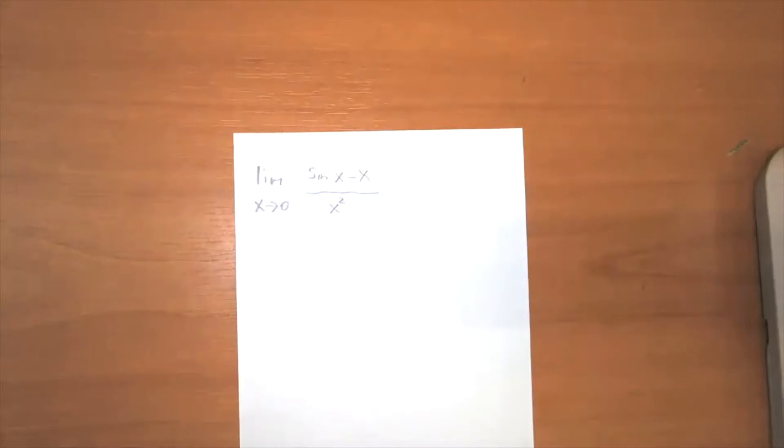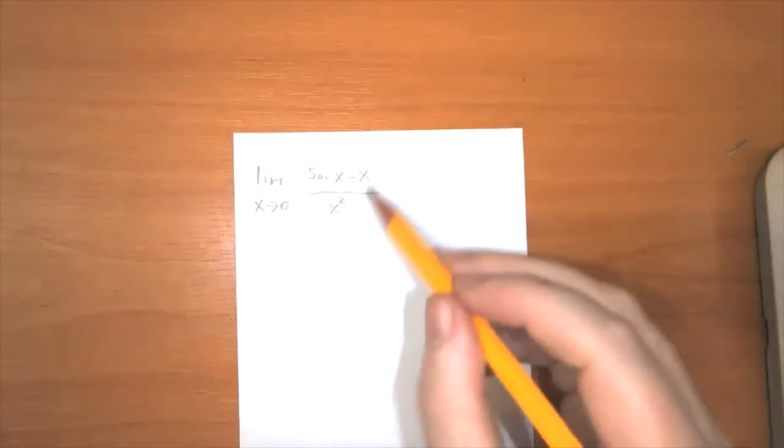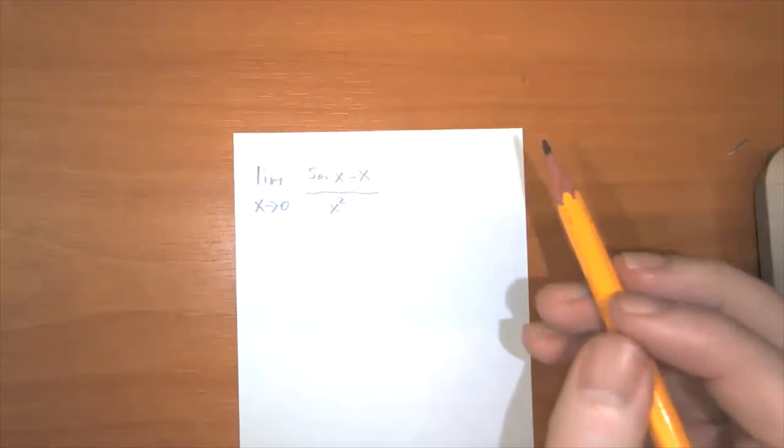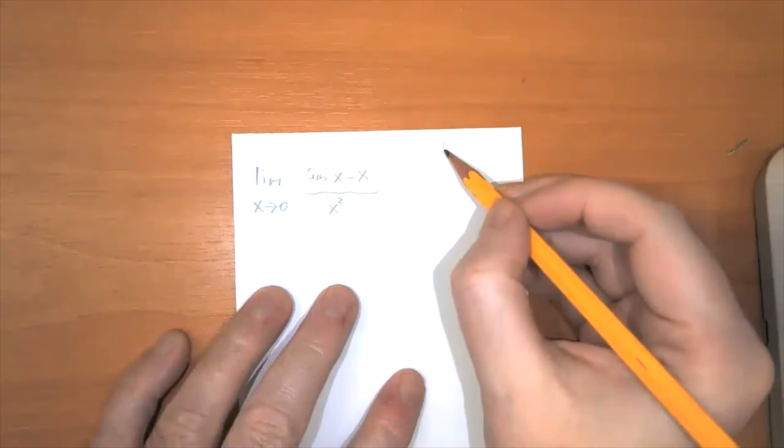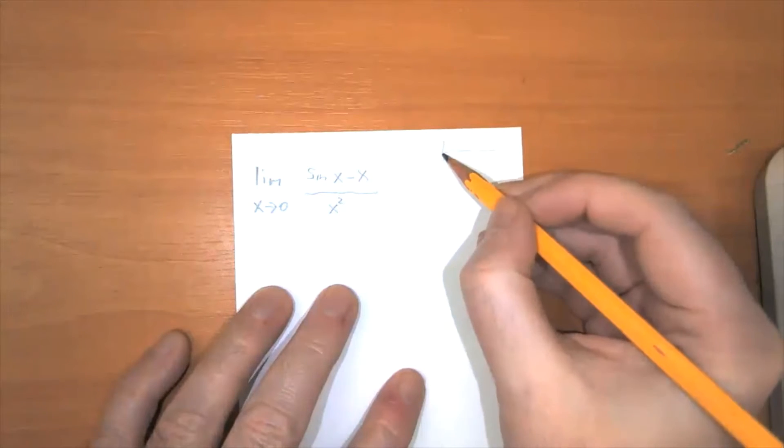So as always, our first trick is that we want to make sure that this is an indeterminate form to figure out if we can apply L'Hopital's rule to it. So sine of x, remember, looks like this.